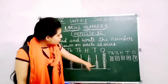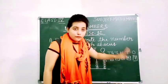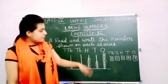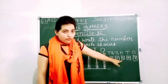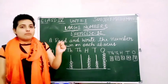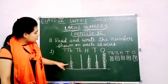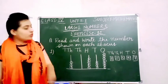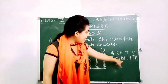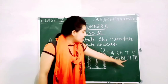And in the 10's place: 1, 2, 3, 4 — 4 beads, so the number is 4. And in the 100's place: 1, 2, 3, 4, 5 — so the number is 5. And in the 1000's place there is no number, so we write 0. And in the 10,000's place: 1, 2, 3 — 3 beads means the number is 3. So the number is 3, 0, 5, 4, 7 — that means 30,547.